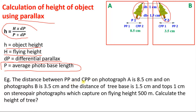For example, the distance between the principal point and conjugate principal point on photograph A is 8.5 centimeters, and on photograph B is 3.5 centimeters. The distance of the tree base is 1.5 centimeters and the top is 1 centimeter on the stereo pair photographs, captured at a flying height of 500 meters. Calculate the height of the tree.